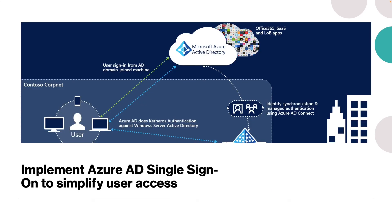Another consideration is implementing Azure AD single sign-on to simplify user access. Azure AD single sign-on automatically signs in users when they are on their corporate devices connected to the corporate network. When enabled, users don't need to type in their password, and usually don't even need to type in their username. This feature provides easy access to cloud-based applications without needing extra on-premises components, and can be combined with either password hash synchronization or pass-through authentication sign-in methods.